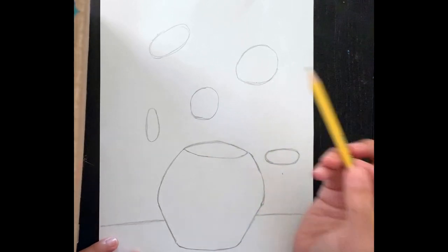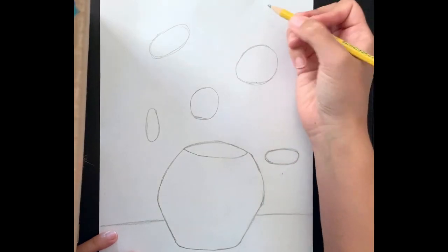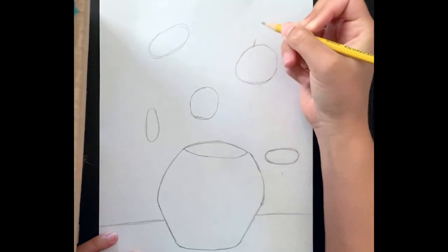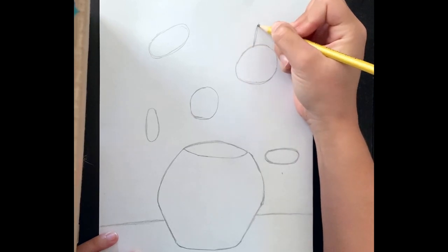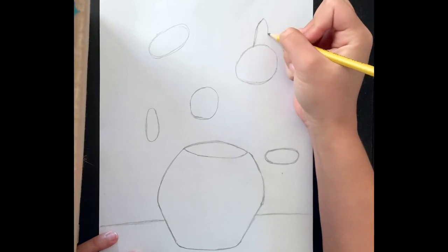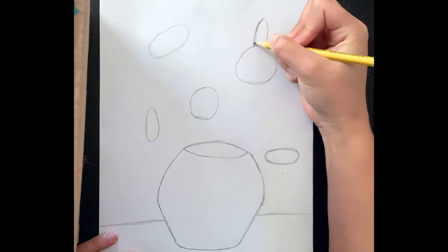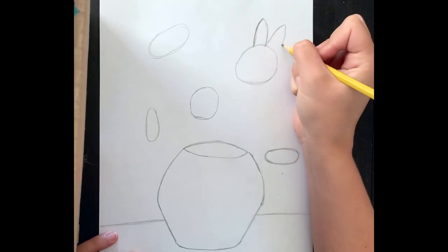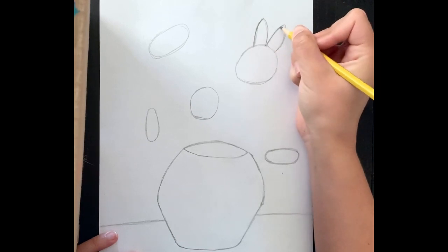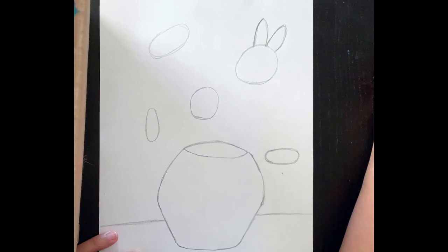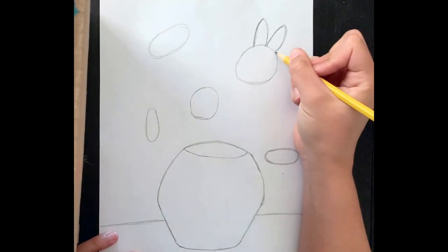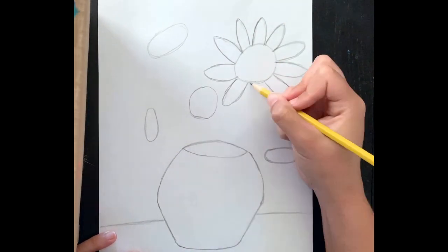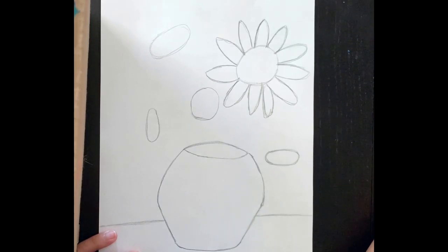So let's start working on this big sunflower right here. I'm going to give this one big petals because it has such a big middle. So my petals are going to curve out and in. Just like this. Now every petal is going to look different. So don't try to make them all look exactly the same. Just like on a real flower, no petals look the same. Okay, so I have my first sunflower all sketched out.